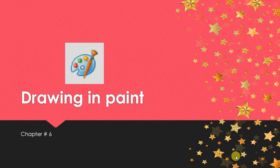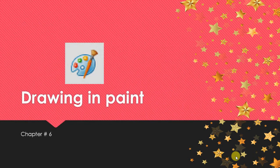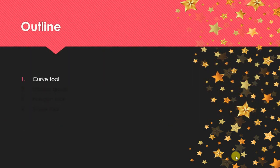Today we are going to discuss the sixth chapter of your computer book: Drawing and Paint. First of all, we discuss the different tools that we use. We discuss different tools of drawing: the first one is the curve tool, second one is shapes group, third one is polygon tool, and the last one is the eraser tool.